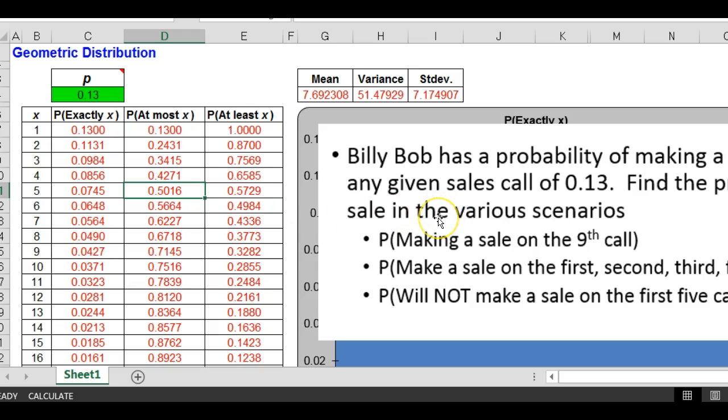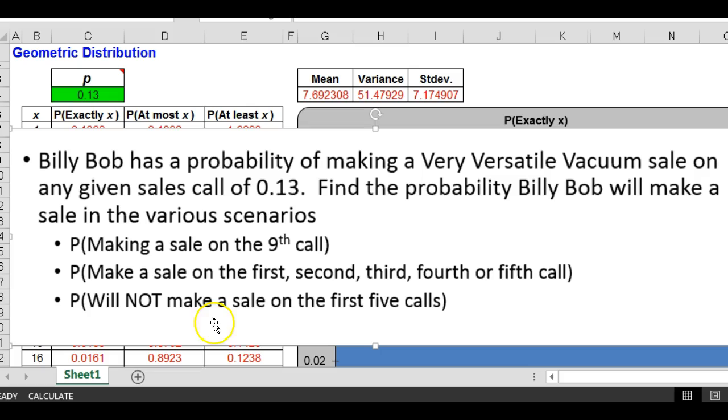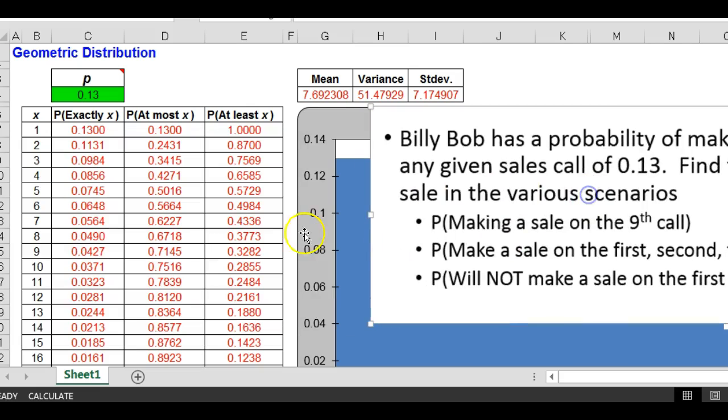Now, probability it will not make a sale on the first five calls. All right, look at this question, will not make a sale on the first five calls. That means it will take Billy Bob at least six calls to make his first sale. All right, so at least six would be .4984.